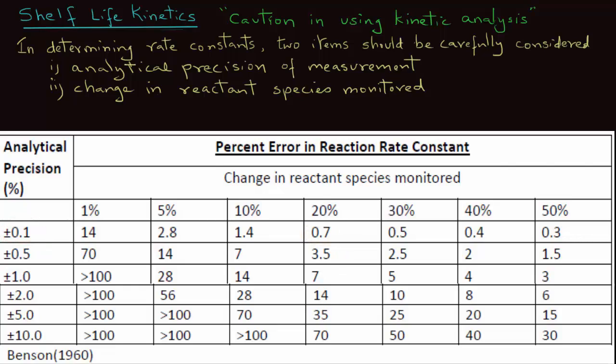On the other hand, if for the same change in reactant species monitored, 20%, if your precision was plus minus 10, so the precision was not very good in measuring your quality attribute, then the percent error in predicting reaction rate constant will be 70.